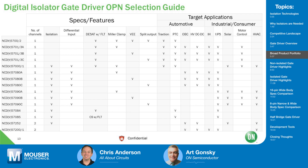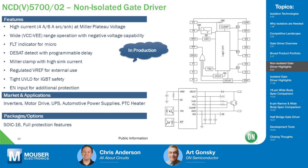The digital isolator gate driver part number selection guide organizes parts by number of channels on the left; the NCD 'V' option denotes automotive AEC-Q qualified parts. An example non-isolated gate driver offers very high current — 4 amps source, 6 amps sink — which is critical at the Miller plateau. If the power switch gets stuck at the Miller plateau voltage it will burn and potentially explode, so the gate driver must detect that and shut it down.